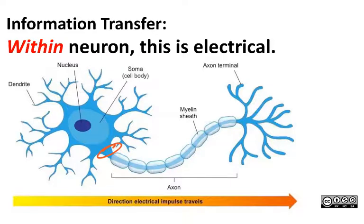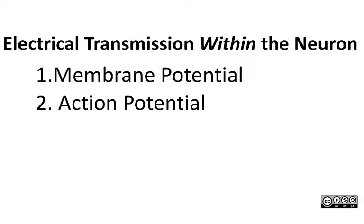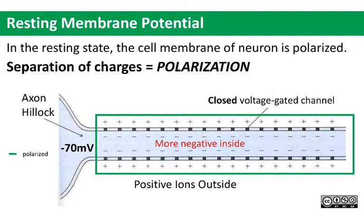That's the axon hillock right there at the beginning of the axon. To understand how this happens, we have to learn about something called the membrane potential, or the resting membrane potential. Then we can see how that is disturbed to create either an action potential or the graded potentials we talked about in video two. Now in the resting state, the cell membrane of neurons and other cells as well is what we call polarized.